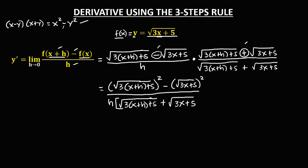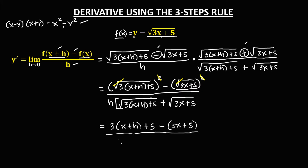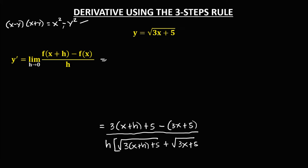We can now simplify the radicals. The squared radicals cancel, giving us 3(x plus h) plus 5, minus (3x plus 5), in the numerator. The denominator remains h times the square root of 3(x plus h) plus 5, plus the square root of 3x plus 5.